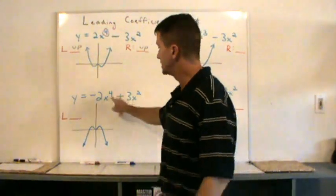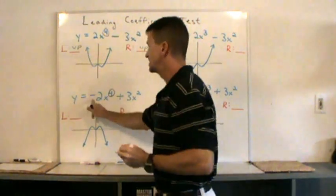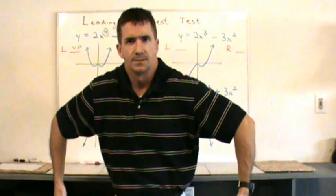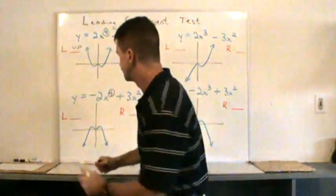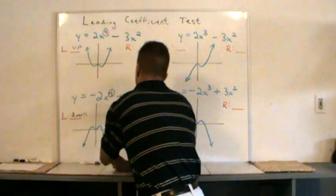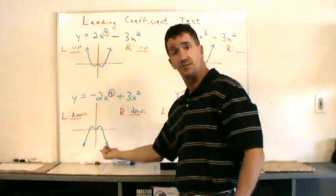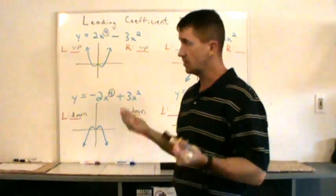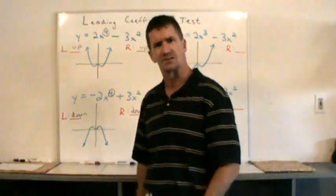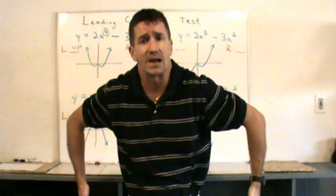Now, what if the highest power is even but it's a negative coefficient? The end behavior will be downward — down on the left side, down on the right side, as you can see in this example. It's called the leading coefficient test. If you just think of y = x² and y = negative x², it helps you recall this. The exponent is even.